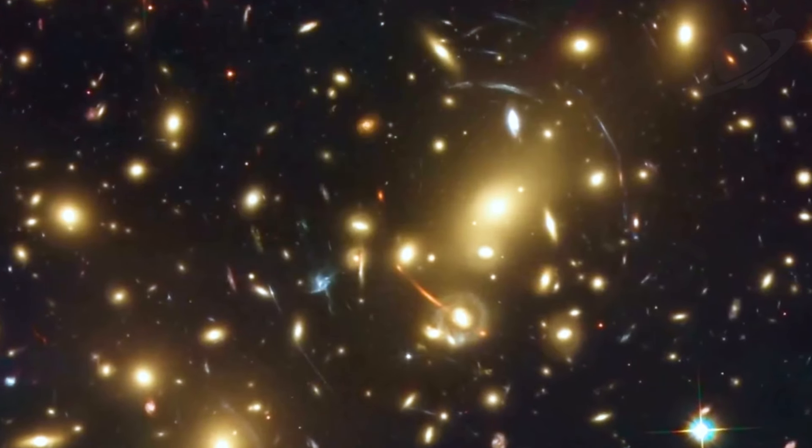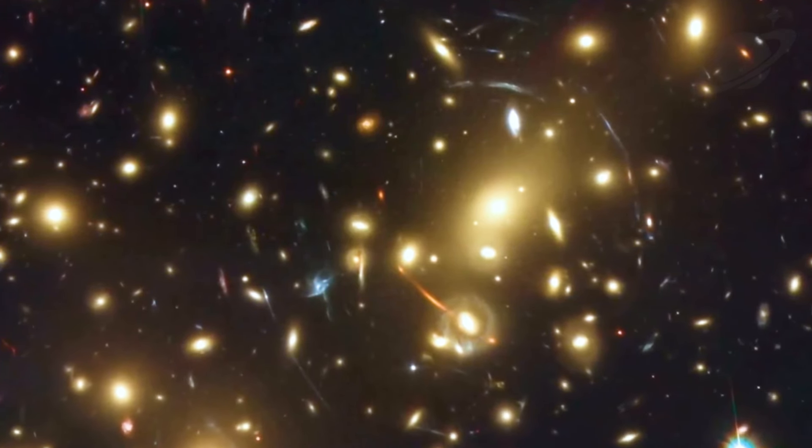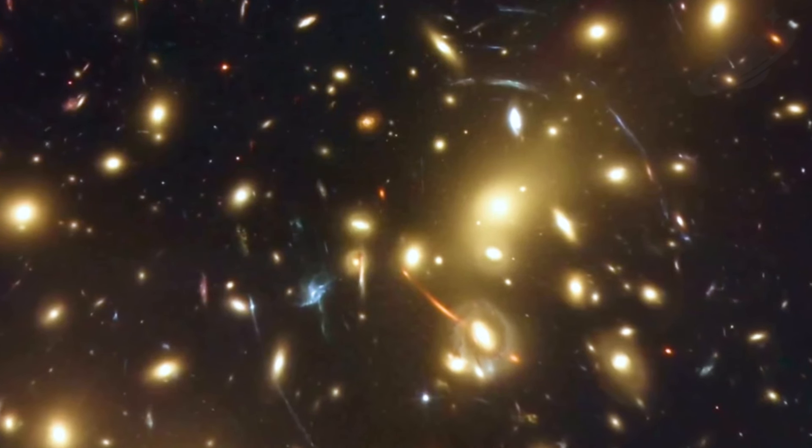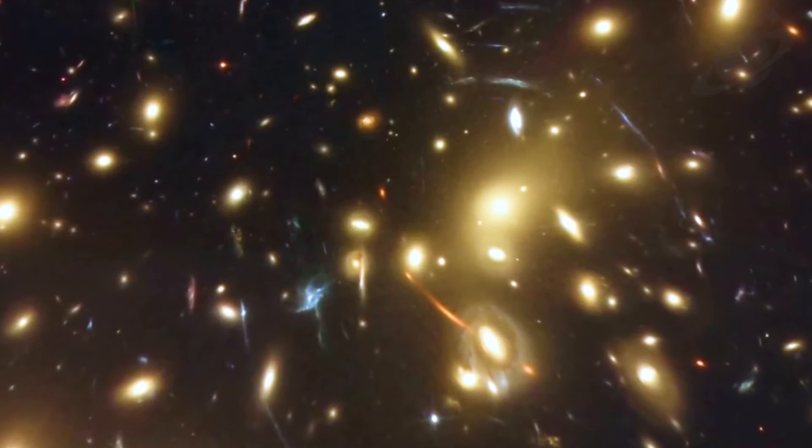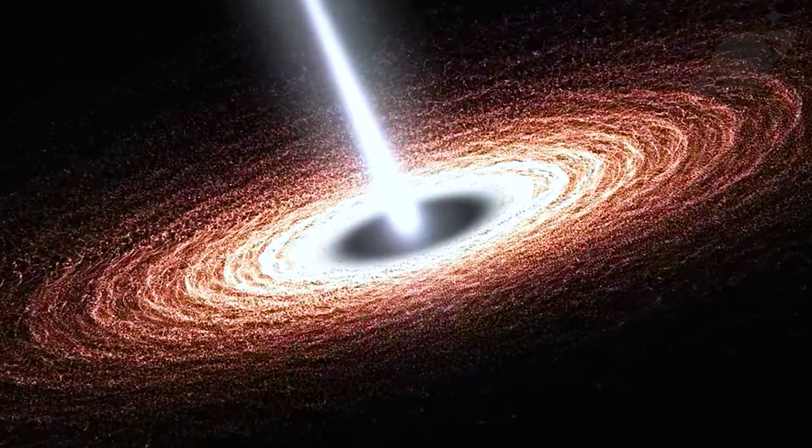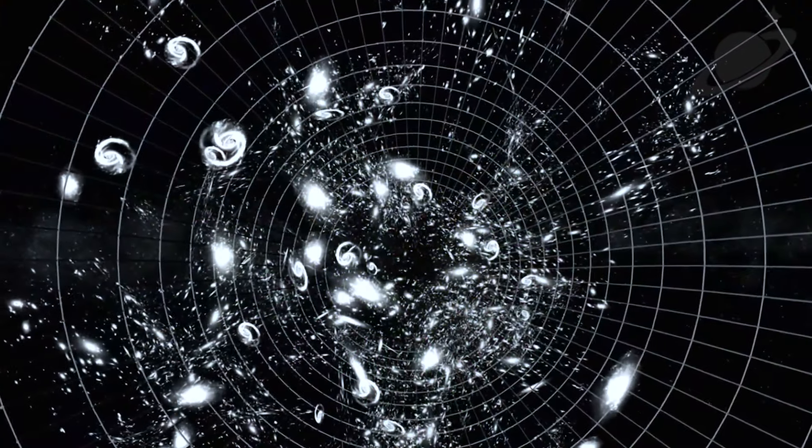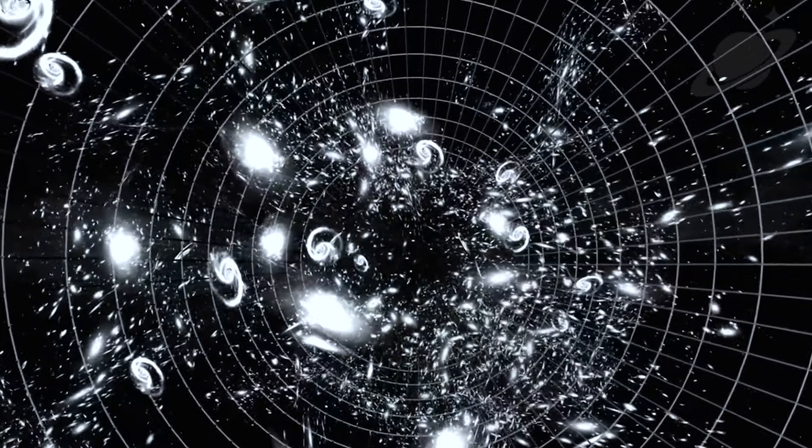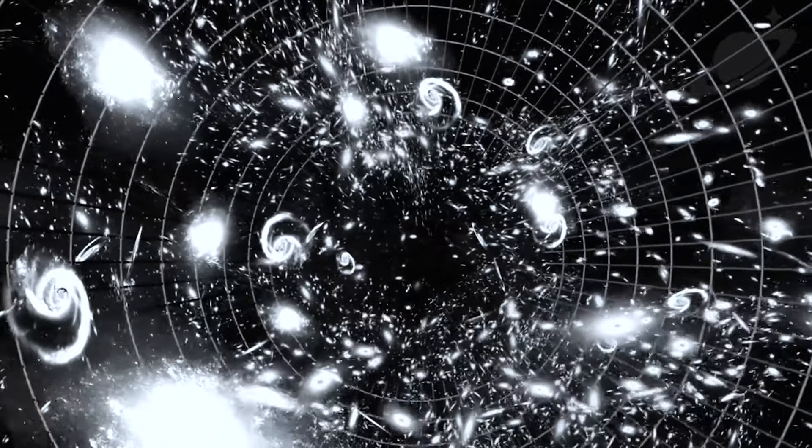Understanding the exact processes behind the creation of voids is a tough task because they're still quite mysterious. One big challenge comes from the enormous scale and complexity of the universe itself. It's massive, with countless galaxies, each with its own unique features. Figuring out how these galaxies interact and contribute to the overall structure of the cosmos is a huge job. Adding to the complexity are dark matter and dark energy, mysterious forces that we can't see but are thought to play a big role in shaping cosmic structures and voids. However, our understanding of these forces is still in its early stages. Because we're not entirely sure what dark matter and dark energy are made of, it's hard to figure out exactly how they affect the formation of voids.